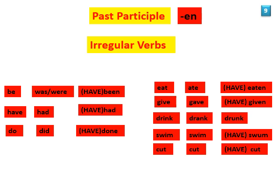Now we come to irregular verbs, which do not follow any rule while forming the past tense. There are a few verbs where you form the past participle by adding -en: be → been, eat → eaten, give → given. There are other irregular verbs where you form the past participle by changing the verb in another way: drink → drunk, swim → swum. Some verbs remain the same, such as cut → cut. How do you learn past participles? Just by reading a lot and listening to the language a lot.